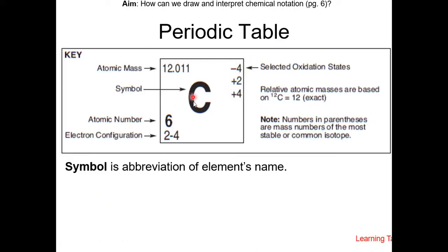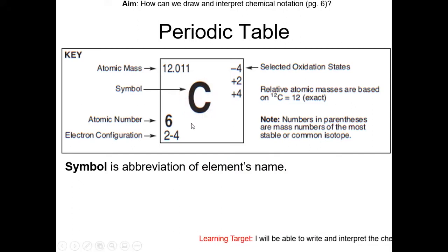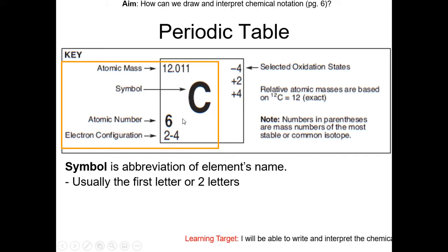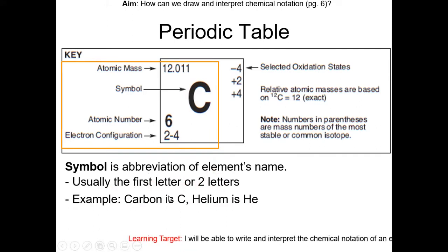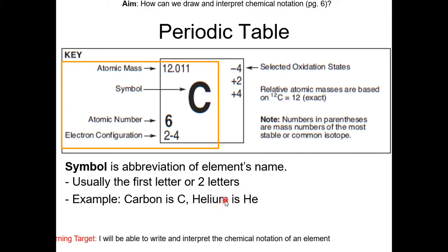Let's zoom in a bit. The symbol is the abbreviation of the element's name. So this is carbon — carbon is abbreviated as C. Usually it's the first letter or first two letters. So carbon is C, helium is He. Obviously H is taken by hydrogen.